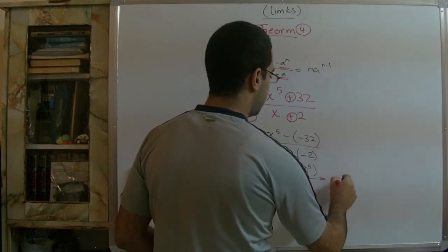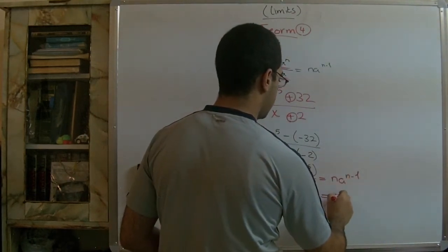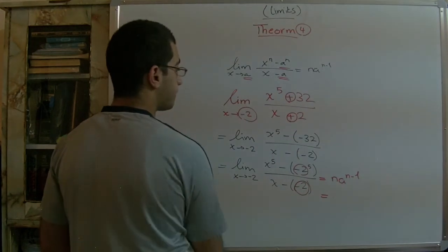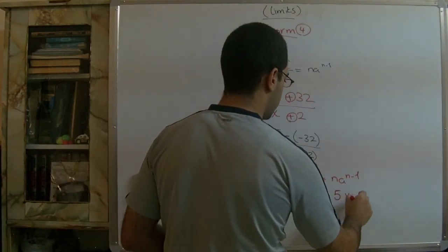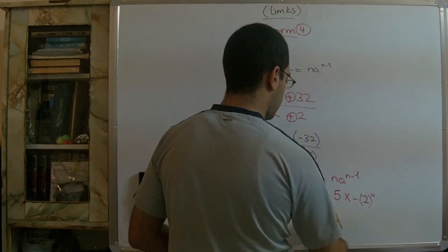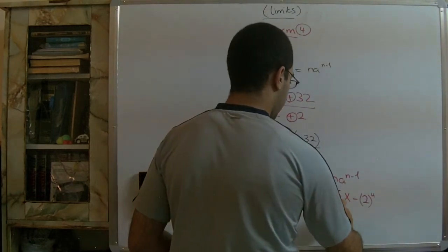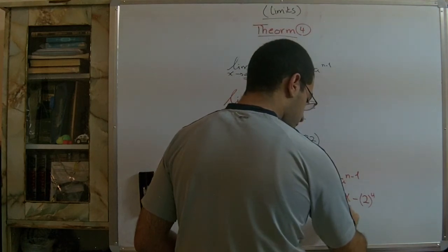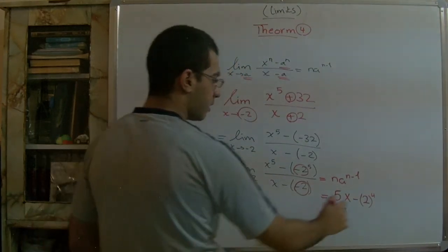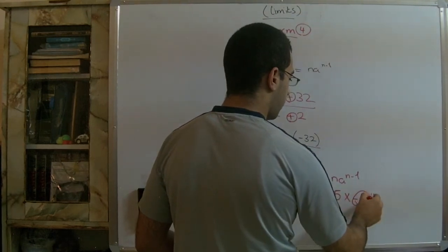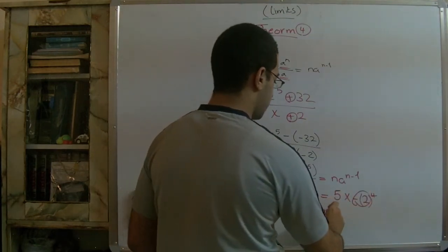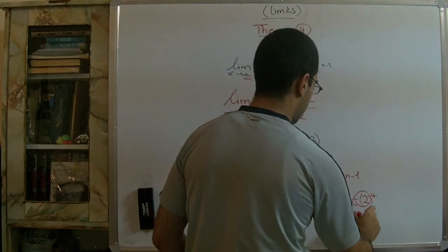So I'll have n·a^(n-1) equals -2 by, I'll have the n equals 5 by (-2)^4. So I'll have -4, or here because this is a negative number of power 4, this is an even exponent, so I'll have 5 by 16 equals 80.